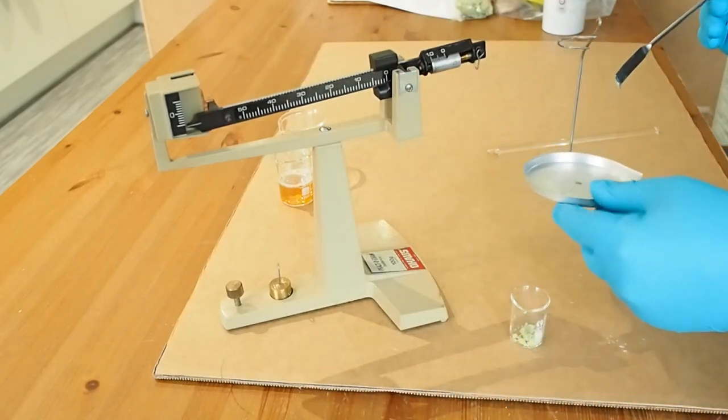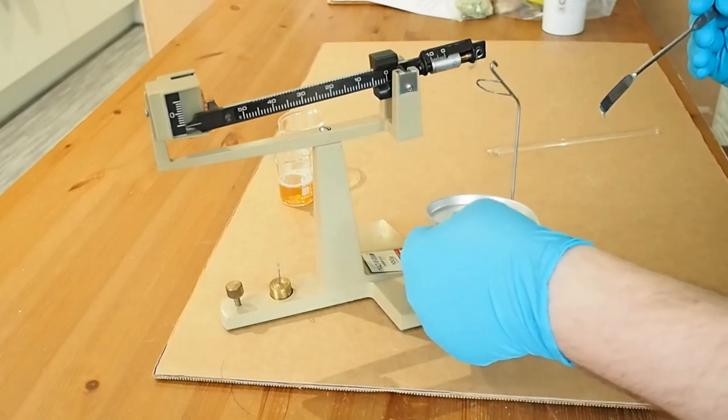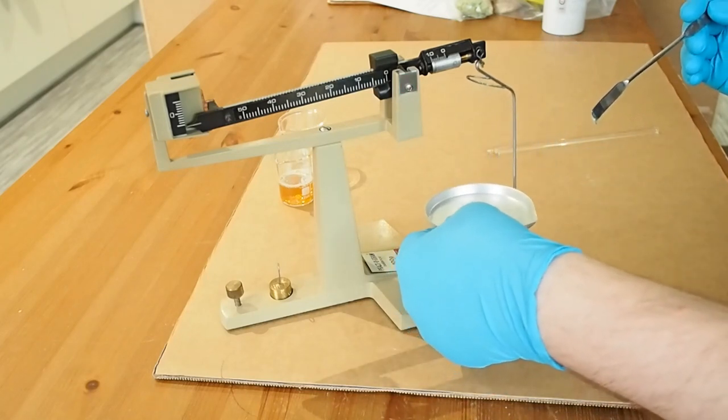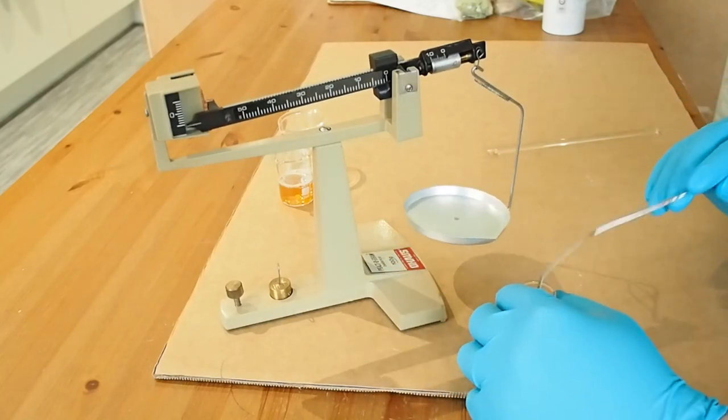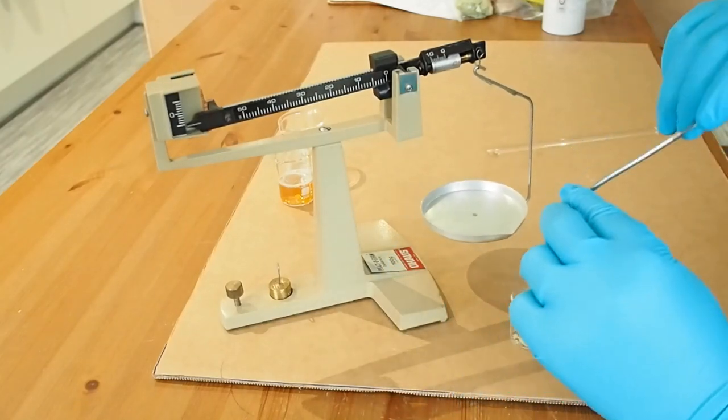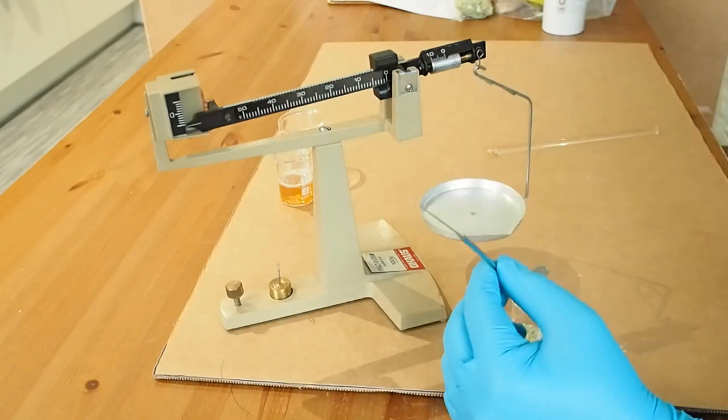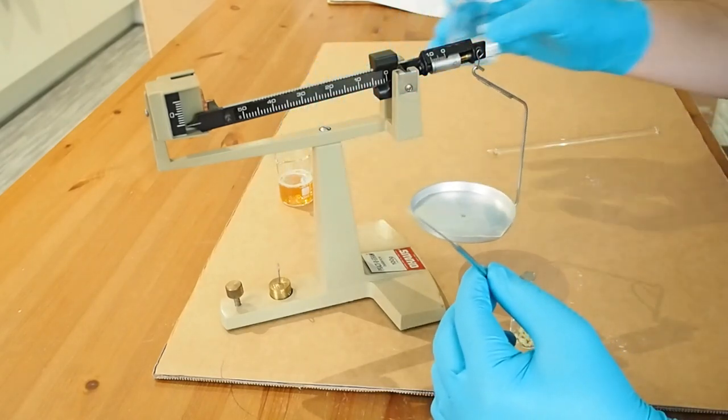Ferrous sulfate you can get from the garden centre because it's used as a plant fertilizer. It's not too bad, it's just good to have precautions because you can obviously poison plants if you give them too much of it.